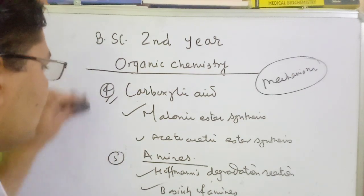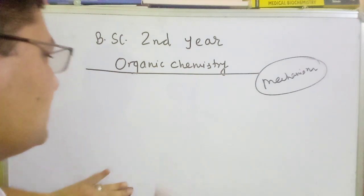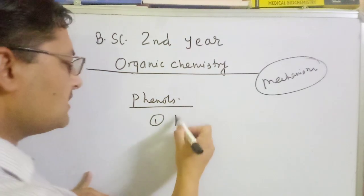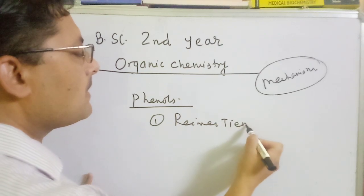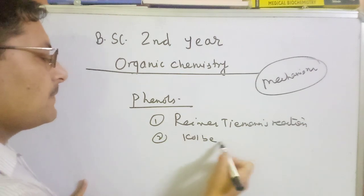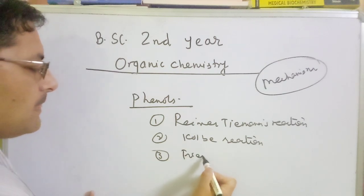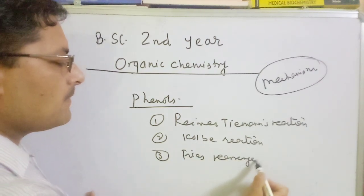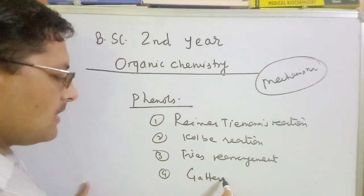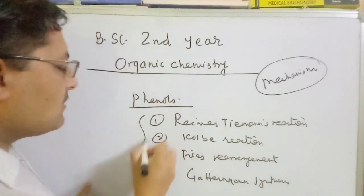The final topic, number 6, is Phenols. In the Phenols topic, I will focus on phenols. I will highlight the Reimer-Tiemann reaction. Number 2 is the Kolbe reaction. Number 3 is the Fries rearrangement. Number 4 is the Gattermann synthesis reaction. Gattermann synthesis — I have 4 reactions to cover for you.